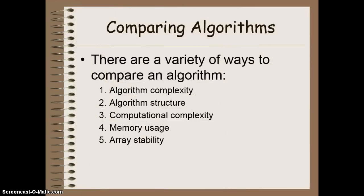When we want to compare a variety of algorithms together, there are a variety of ways we can do that. The first is called algorithm complexity, which is basically taking a look at how confusing the code is to try and write. The second one is algorithm structure, or what is the basic method we are going to use to divide or sort our particular array. The third is the computational complexity, or how hard it is for the computer to sort the data.